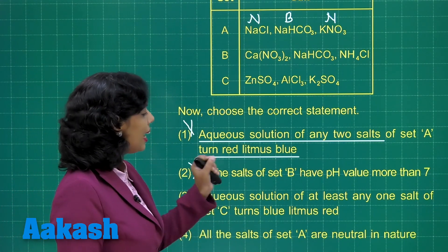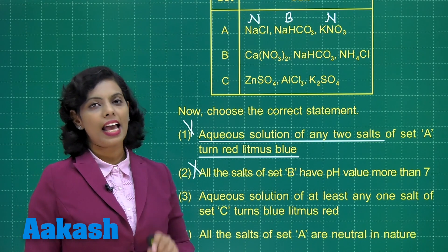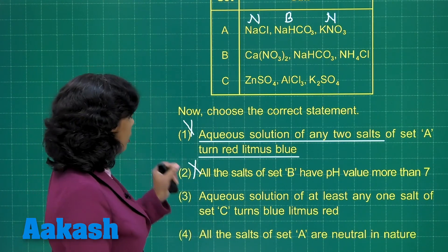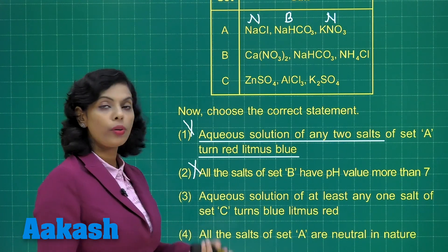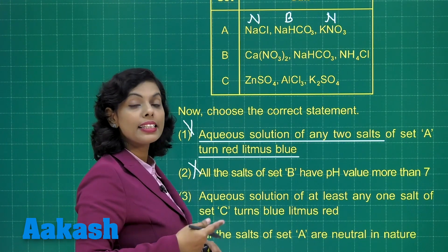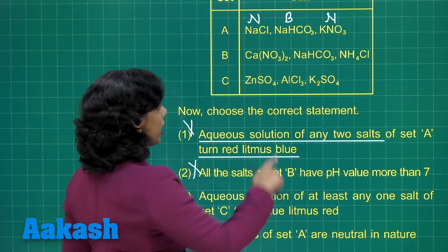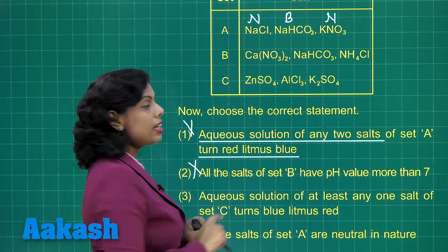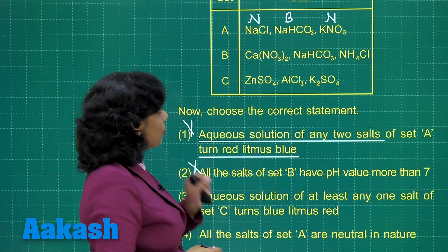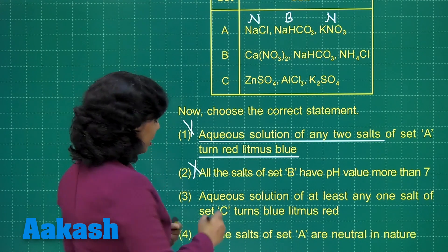Option 3 states: aqueous solution of at least any one salt of set C turns blue litmus red — meaning at least one salt should be acidic. In set C: zinc sulfate is a salt of strong acid H₂SO₄ and weak base zinc hydroxide, so it is acidic. Aluminium chloride is a salt of weak base aluminium hydroxide and strong acid HCl, also acidic. K₂SO₄ is a neutral salt. So at least one salt is able to convert blue litmus into red — this is the correct statement.